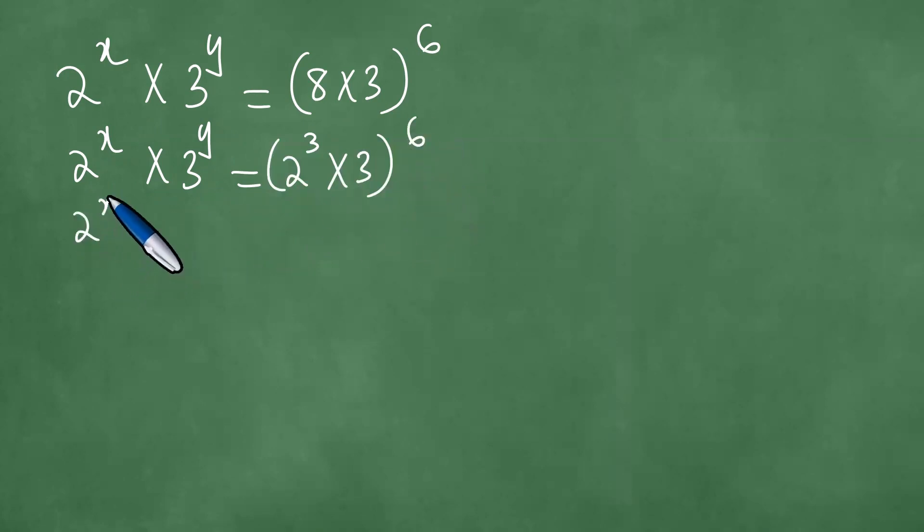Which is 2 to the power x times 3 to the power 6, giving us 2 to the power x times 3 to the power y equals 2 to the power 18 times 3 to the power 6.